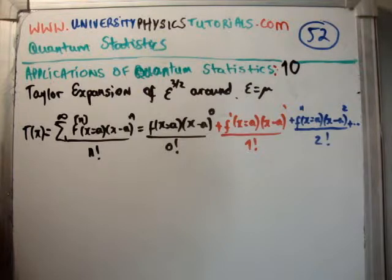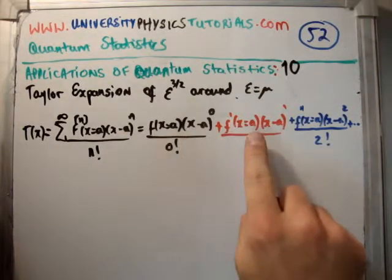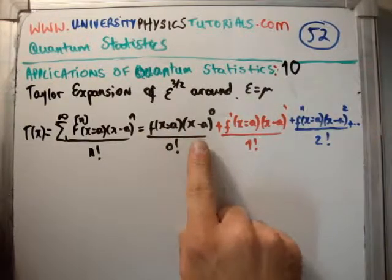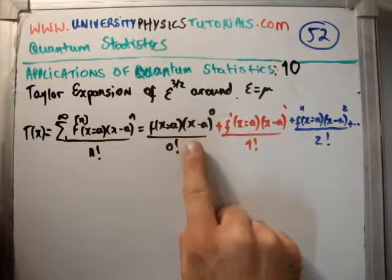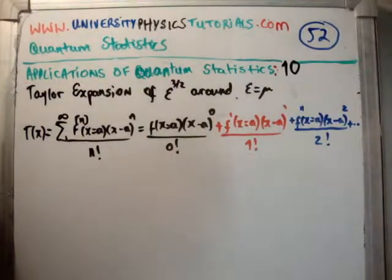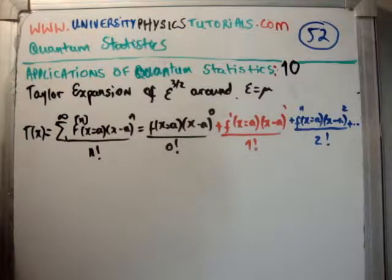Just a note that we need to evaluate the derivative of our function at the point, in this case it's going to be ε = μ, and we need to have x, our function minus μ, and we have the different powers, and we need to divide by the factorial function. I explained it in my Taylor series video, so I'm not going to do it again. This is just a case of applying it.